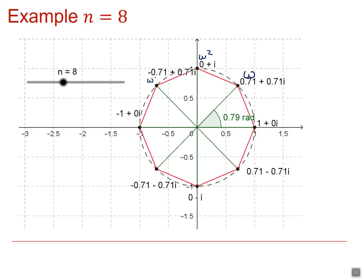So this will be omega cubed, omega to the 4, omega to the 5, omega to the 6, omega to the 7, and of course we always get 1. You can think of that as omega to the 0 if you prefer.